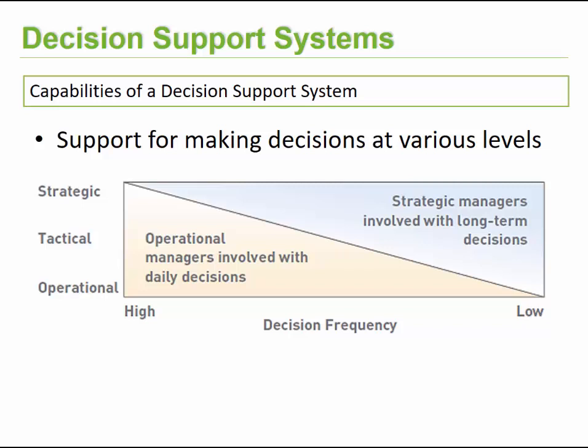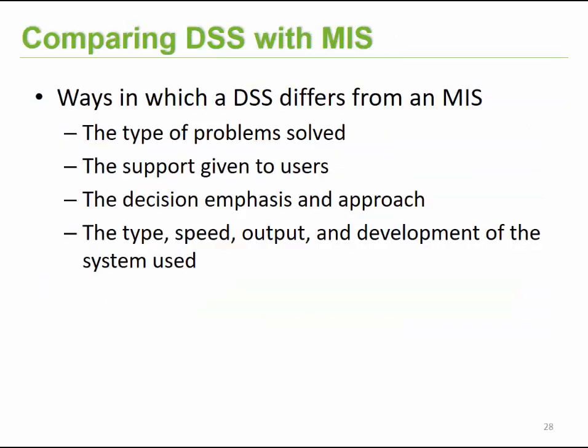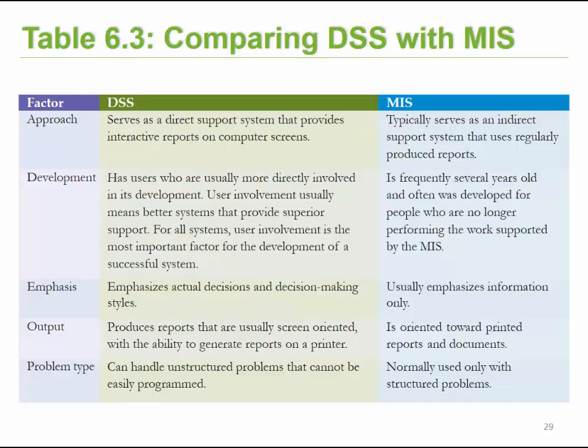What is the difference between a decision support system and a management information system? It comes down to the types of problems being solved, the amount of support given to the user, the emphasis and approach followed for decisions, as well as the type, speed, output, and development of the system being used. The following table better compares decision support systems with management information systems.